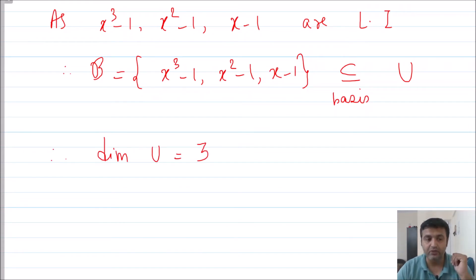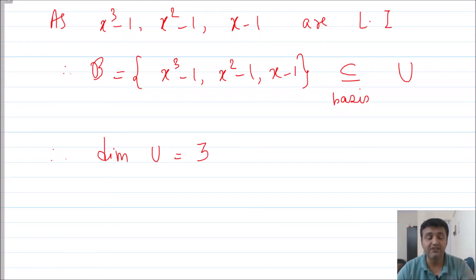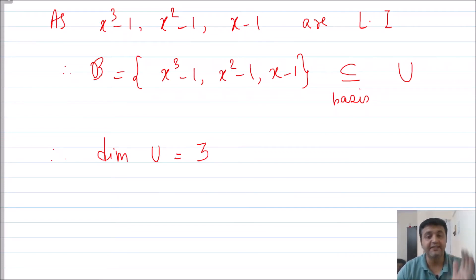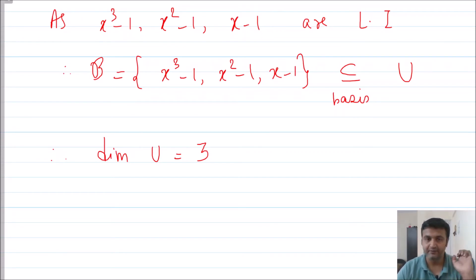Since these three polynomials span U and are linearly independent, they form a basis for the subspace U, and therefore the dimension of U is 3. I would suggest you pause the video and think about what the basis and dimension for V will be before proceeding.